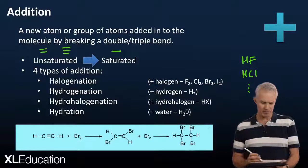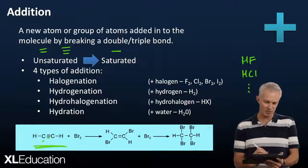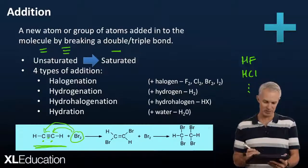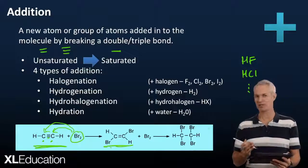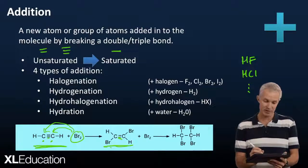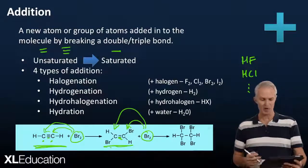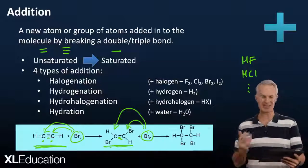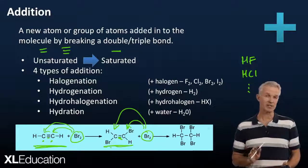Here's an example. On the left we've got ethine with a triple bond. One of those bonds gets broken, making space on each carbon for two bromines to get added in — one on each side — giving us 1,2-dibromoethene. That's still an unsaturated compound because of the remaining double bond. We can break that double bond again and add more bromine, giving us 1,1,2,2-tetrabromoethane. Both are examples of halogenation — an example of addition.